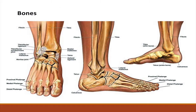Four bones provide the framework for the ankle: the tibia and fibula of the lower leg, and two tarsal bones, the talus and to a lesser extent the calcaneus. The ankle joint proper is an articulation of an arch-shaped chamber or mortise, formed medially and superiorly by the tibia in the form of the medial malleolus and tibial plafond, and laterally by the fibula in the form of the lateral malleolus. The syndesmosis, a fibrous membrane, connects the tibia to the fibula to complete the mortise, which then articulates with the talus.